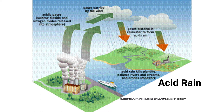When industrial gases are carried by the wind to the clouds, they get mixed with water and make sulfuric acid, hydrochloric acid, and nitric acid. This comes down with the rain on the earth and it is so acidic that it kills plant life, pollutes rivers and streams, and erodes stonework as well. This is the whole cycle.